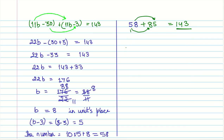An interesting thing for you to try: we assumed the digit in the units place is B and the digit in the tens place is B minus 3. But the problem only says the two digits differ by 3 — it could be more or less. So you could also take the units digit as B and the tens digit as B plus 3. Try solving with that assumption and see what answer you get. That would be a really interesting discovery.